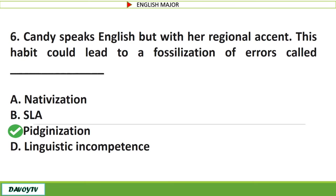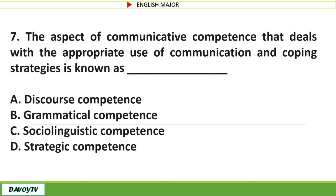Question number 7. The aspect of communicative competence that deals with the appropriate use of communication and coping strategies is known as blank. A. Discourse competence. The correct answer is letter D: Strategic competence.